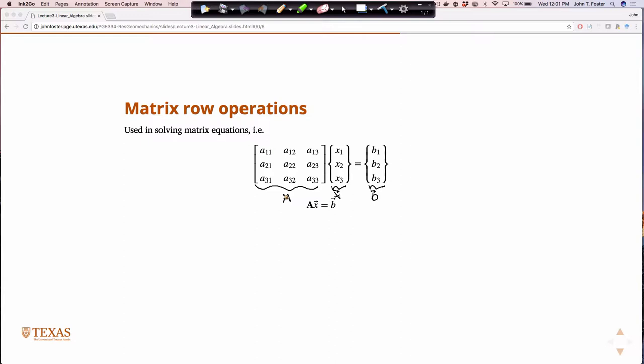This is no different than if we just wrote down a system of equations. If we did our matrix vector multiplication on the left side, we'd have an equation A11 X1 plus A12 X2 plus A13 X3 equals B1. A21 X1 plus A22 X2 plus A23 X3 equals B2, and likewise for the last equation. When we solve systems of equations in this matrix form, we can work through some things we call matrix row operations to solve these systems of equations.